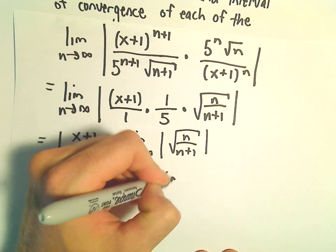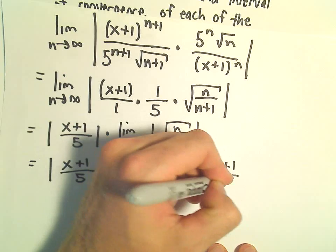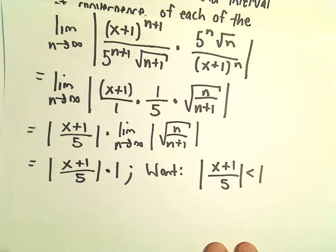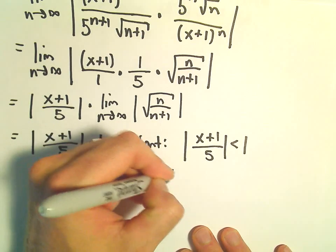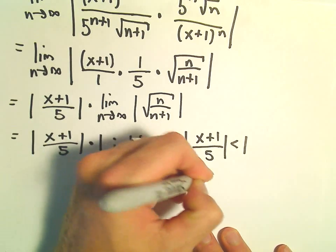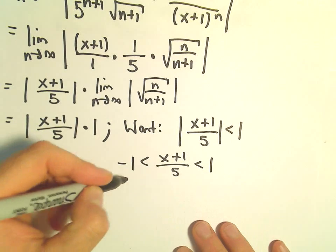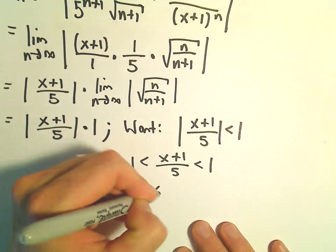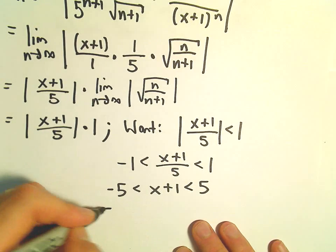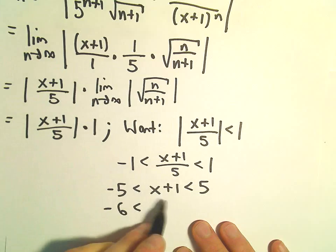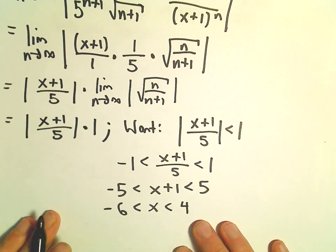So what we want is the absolute value of x plus 1 over 5 to be less than 1 to converge. We set up the inequality: negative 1 less than x plus 1 over 5 less than positive 1. Multiplying both sides by 5 gives negative 5 less than x plus 1 less than positive 5. Subtracting 1 gives negative 6 less than x less than positive 4.